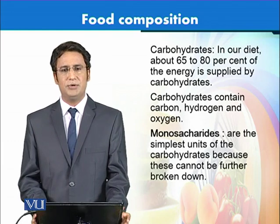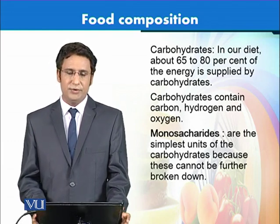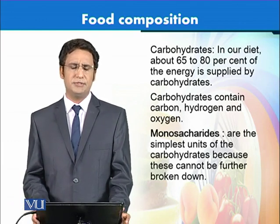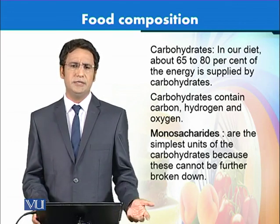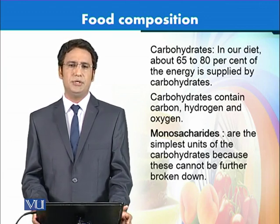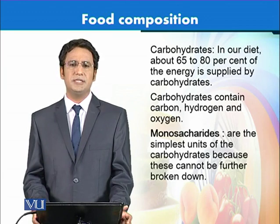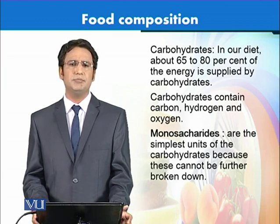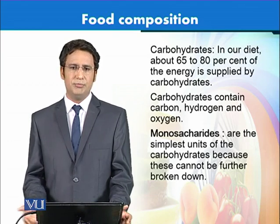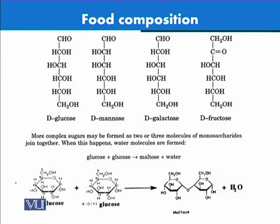Starting with carbohydrates, they are the element of food which provides most of the energy in Pakistani diet — about 65% to 80% of our daily energy comes from carbohydrates. The basic unit of carbohydrates is called monosaccharides, because they are simple sugars that cannot be broken down further into simpler elements. Most commonly: glucose, mannose, galactose, or fructose.